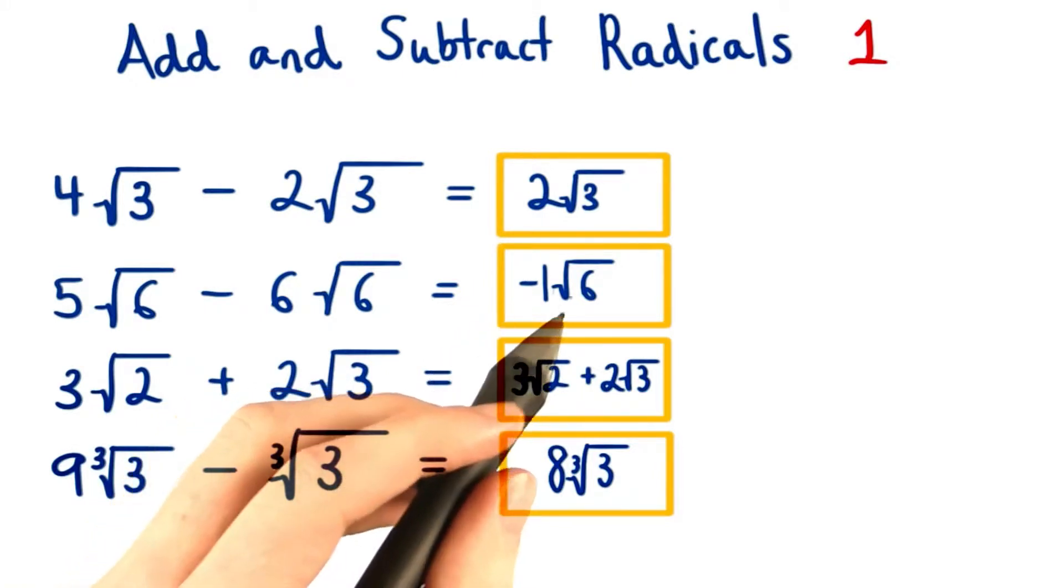For the second one, you might have written it as negative root 6 or negative 1 times root 6. Both are correct.